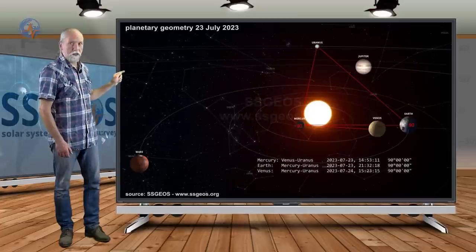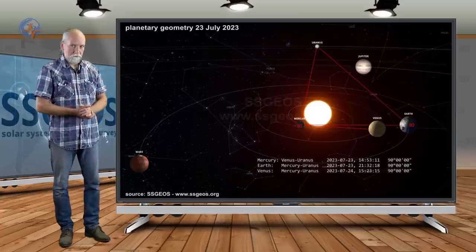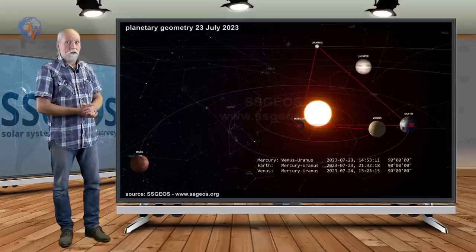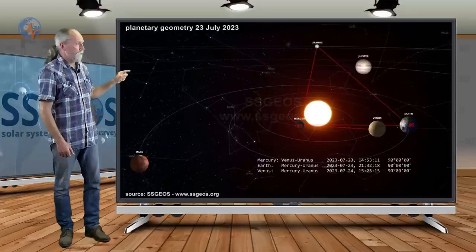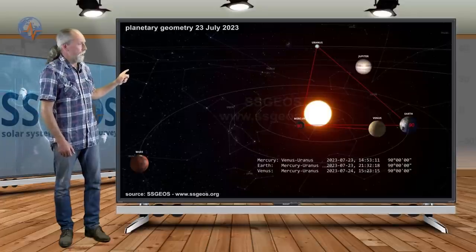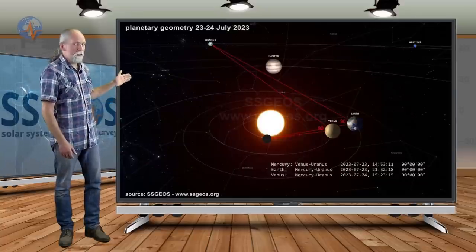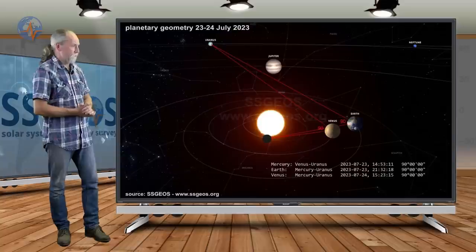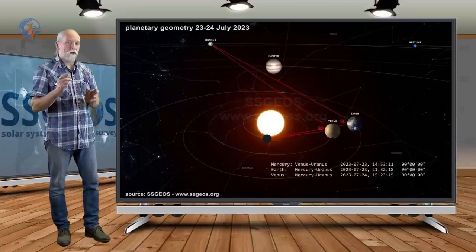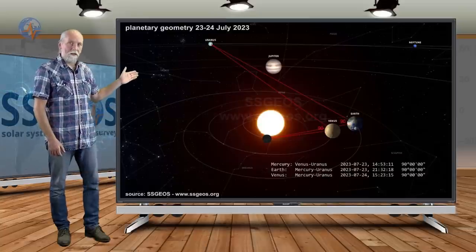We see today Mercury in a 90-degree angle with Venus and Uranus. Interestingly, also tonight we have Earth in a 90-degree angle with Mercury and Uranus. Then tomorrow is really very tight—we have Venus in a 90-degree angle with Mercury and Uranus. So we have three 90-degree angles, but the most important, the most significant are those with Mercury and with Venus.